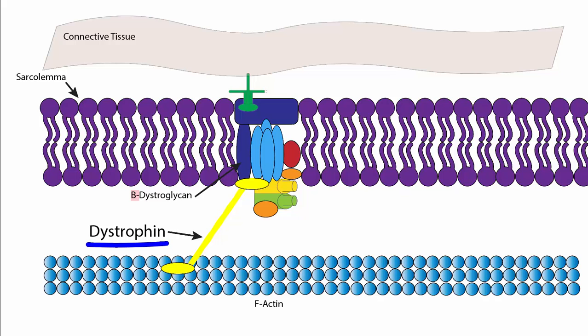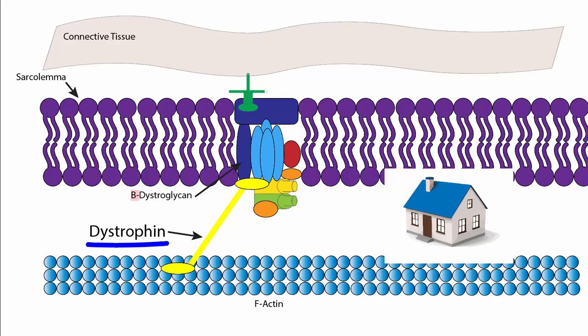Dystrophin is a large protein that attaches portions of the sarcomere to the cell membrane. Think of a house. A house needs to have support beams to give it structure and support. If there aren't support beams, then the house is more susceptible to collapse.